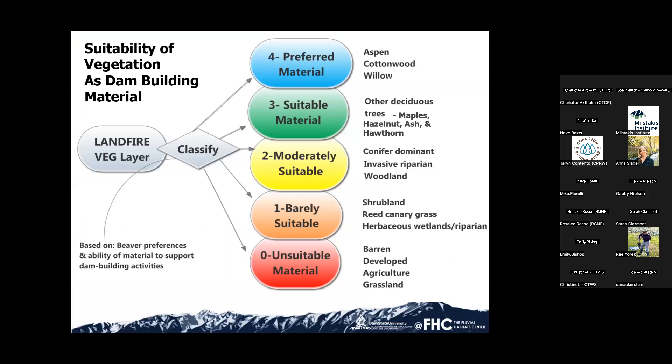I wanted to mention these broad categories of how we classify the vegetation into five categories — from unsuitable, things such as ag land or barren, up to preferred material: aspen, cottonwood, willow, depending on where you are. It might be young maple or other things, but this gives you an idea of that classification scheme.